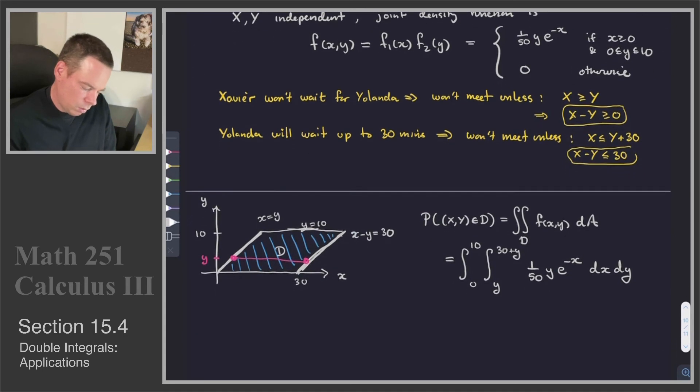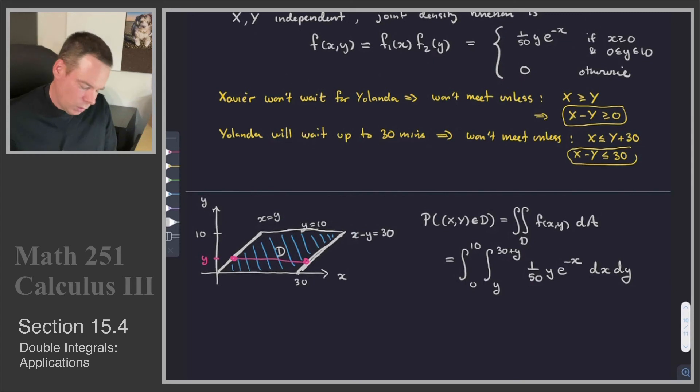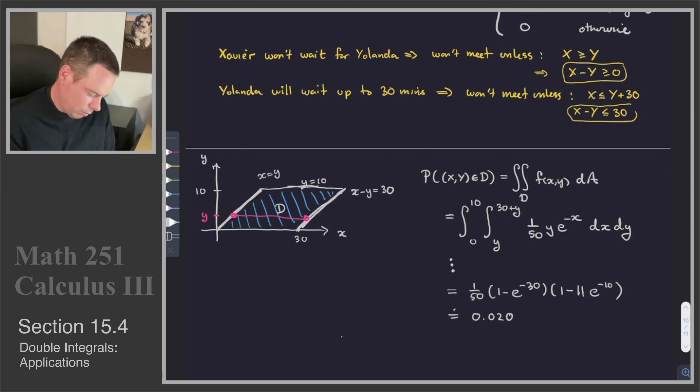So there is our integral that's going to represent the probability that they meet. We can integrate with respect to X first and then plug things in, and then we get a polynomial integrate with respect to Y. The details of the actual calculation I will leave to you. It's fairly straightforward and what we get is a result of 1 over 50 times 1 minus e to the negative 30, then 1 minus 11 e to the negative 10. This is approximately 0.020.